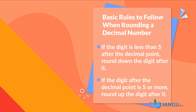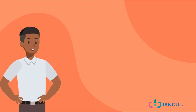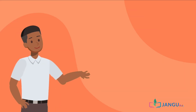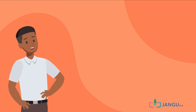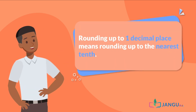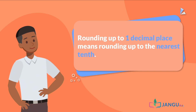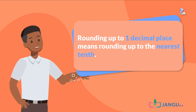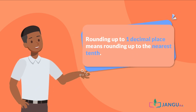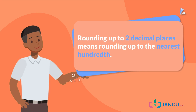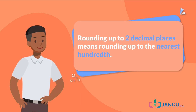Rounding of decimals to decimal places means rounding up to the nearest tenth, hundredth, and thousandth, and so on. That is, rounding up to one decimal place means rounding up to the nearest tenth. Rounding up to two decimal places means rounding up to the nearest hundredth. And rounding up to three decimal places means rounding up to the nearest thousandth.